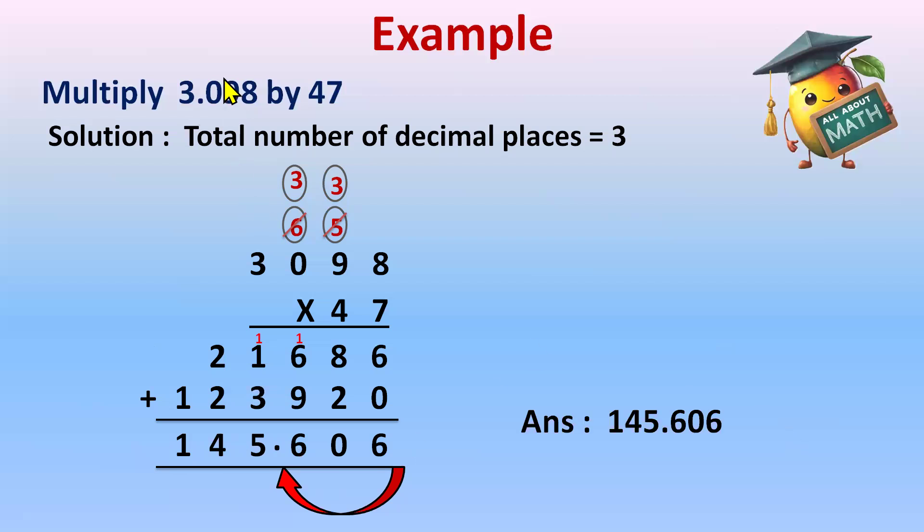In every question, when you are multiplying the decimal number with the whole number, remove the decimal, multiply it, and then at the end count the decimal places. It could be 3, it could be 1, it could be 2. And then after 2 or 3 or 1 digit, you will write the decimal according to the decimal places in the question. And you will get your answer easily.